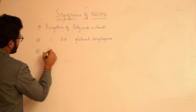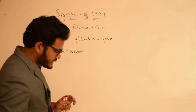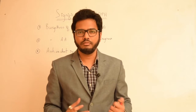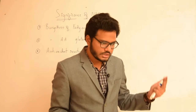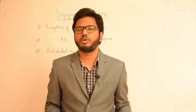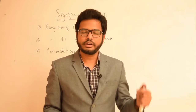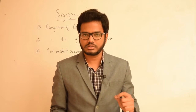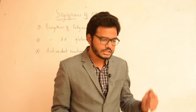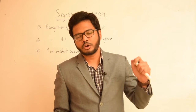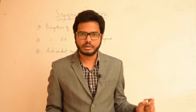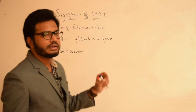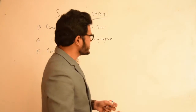NADPH has an essential role in antioxidant reactions. Within the biological system there is formation of hydrogen peroxide, which is deemed to be very harmful to various living cells. This hydrogen peroxide is reduced to water by glutathione reductase. Reduced glutathione is essential for converting hydrogen peroxide to water, and glutathione is maintained in its reduced state by NADPH.